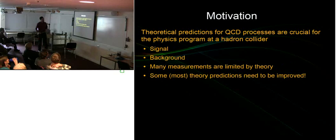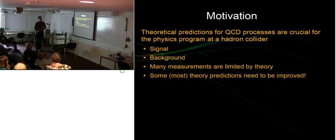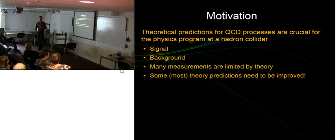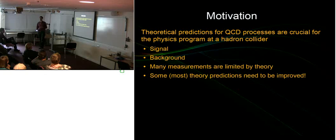We are quite a big collaboration, so you have to have a good motivation to get nine theorists to work together. Our motivation is that we need good theoretical predictions for processes at the LHC or Tevatron — good predictions for both the signal of what you want to measure and all the backgrounds that will prevent you from seeing that signal.